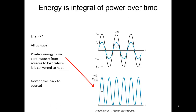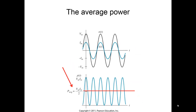If we determine the energy, we know that the energy is just the integral of power over time. That positive energy flows continuously from the source to the load, just like we would normally associate with a DC source with a resistor. The resistor dissipates that energy as heat; no power ever flows back to the source. Looking at the average power, we see that halfway between zero and the peak power Vm·Im, the average is Vm·Im over 2.